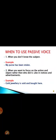The second case is when you want to focus on the action and object rather than who did it. For example, in notices or advertisements — 'Gold jewelry is sold and bought here.' Here gold jewelry is the object, and the actions are sold and bought. There is no subject. So passive voice is used when you don't know the subject, or when the object and action are more important than the doer.